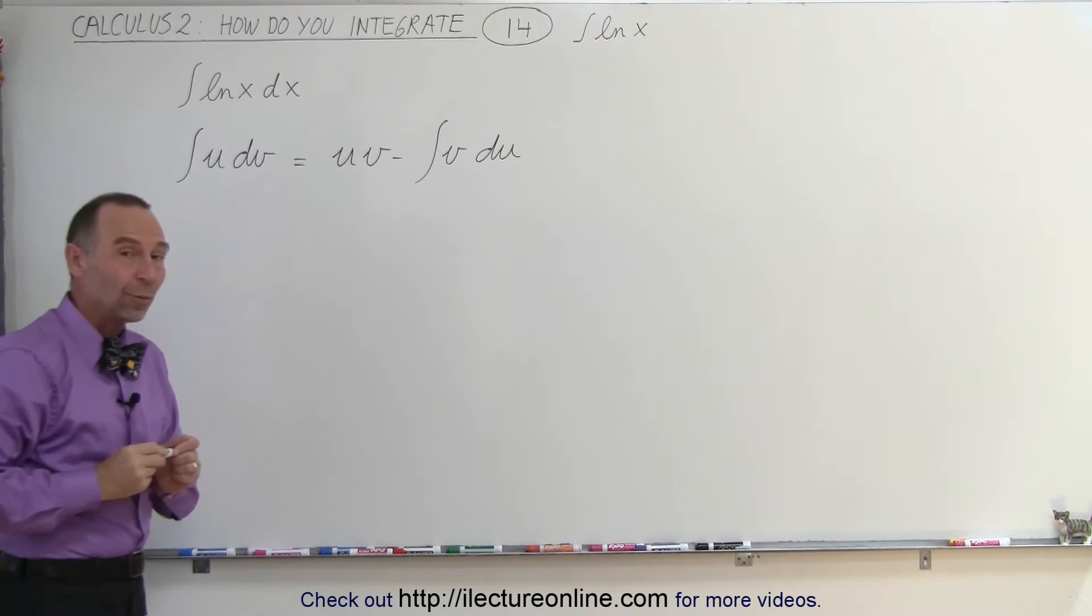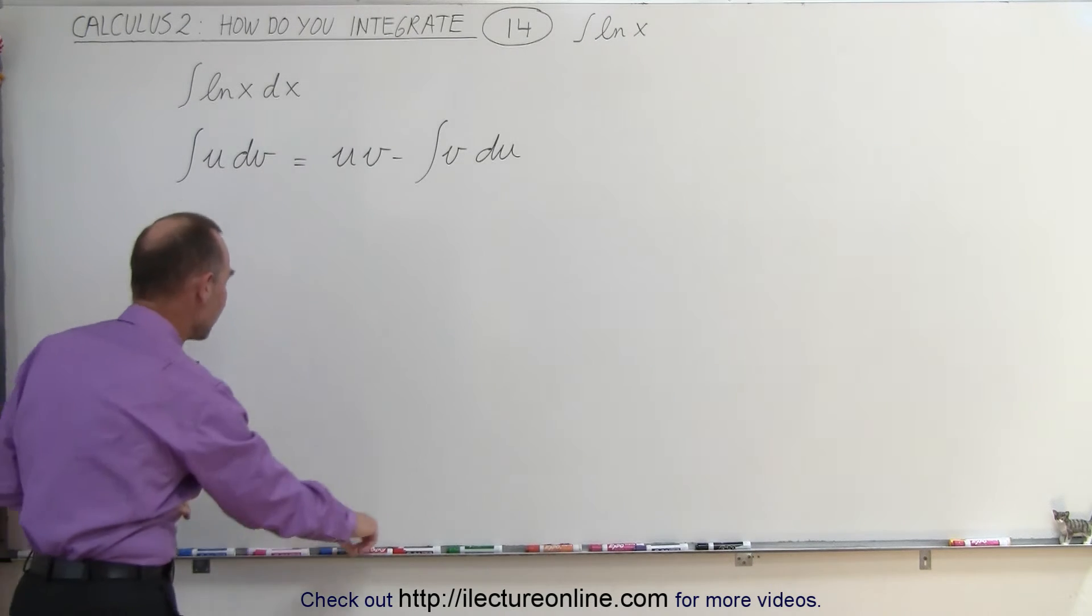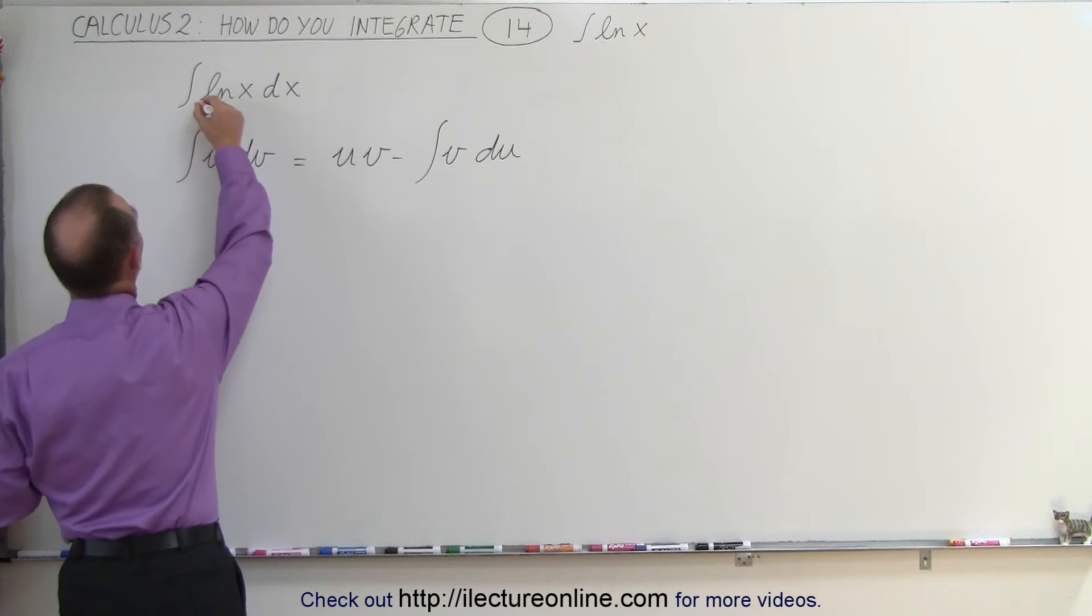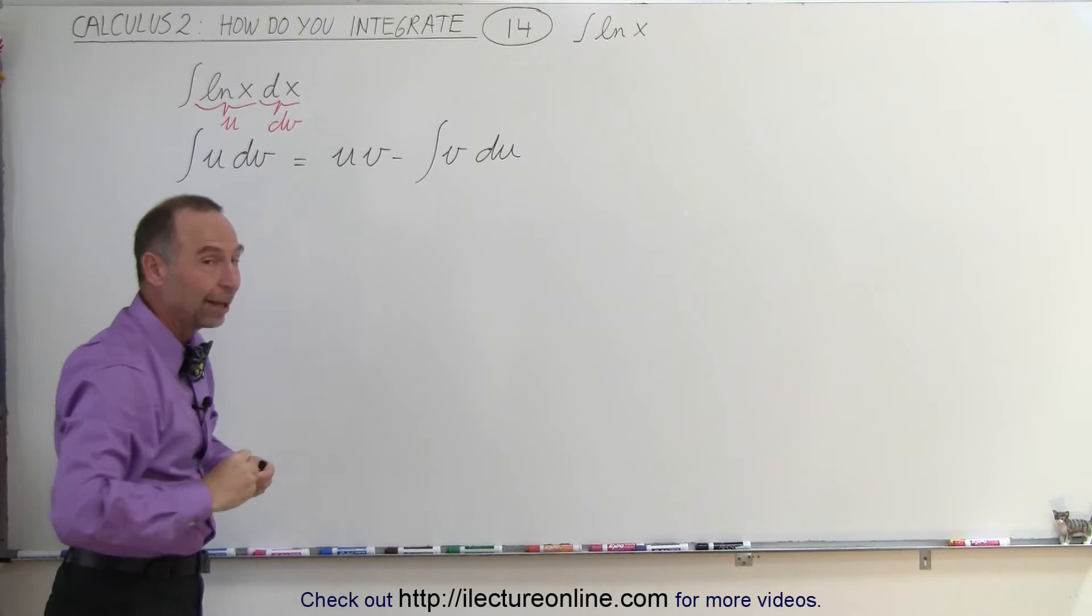So the trick here is to recognize inside the integral which one is u and which is dv. And you'll find that if you let natural log of x equal u and the dx equal dv, then you can actually integrate that.